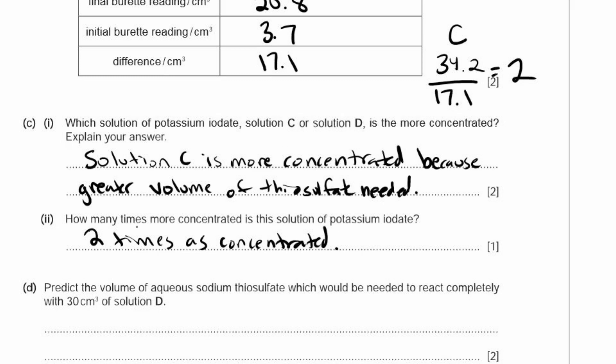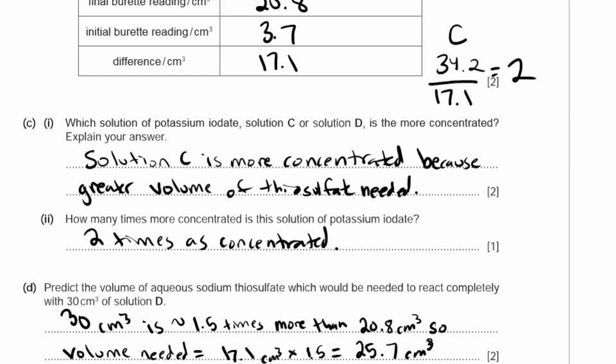C2. How many times more concentrated is this solution of potassium iodate? 34.2 divided by 17.1 equals 2, so this is 2 times more concentrated. D. Predict the volume of aqueous sodium thiosulfate which would be needed to react completely with 30 cm³ of solution D. 30 cm³ is about 1.5 times more than 20.8 cm³. So the volume needed equals 17.1 cm³ times 1.5, which equals 25.7 cm³.